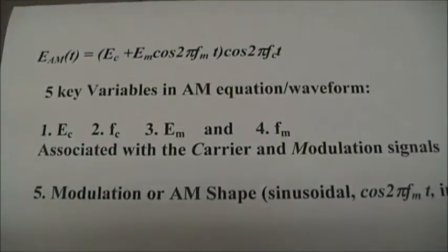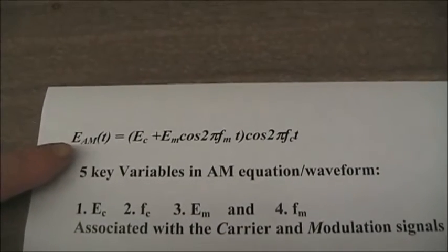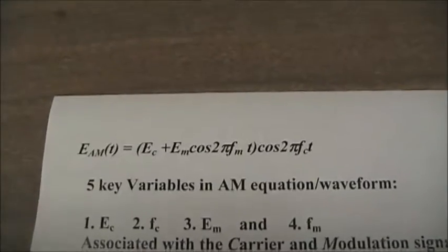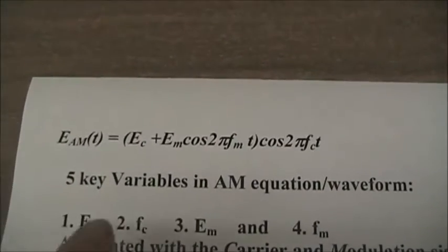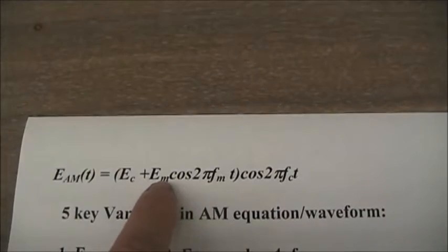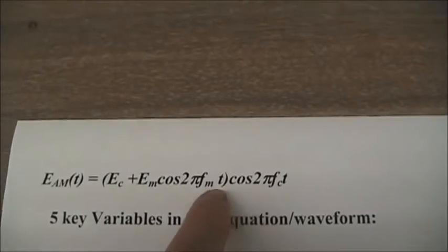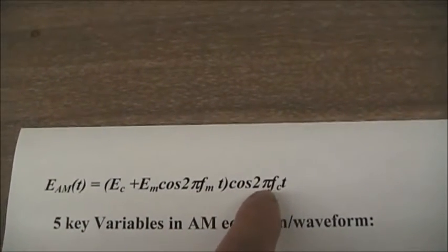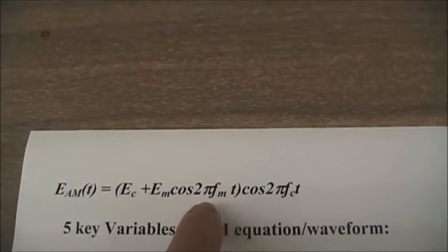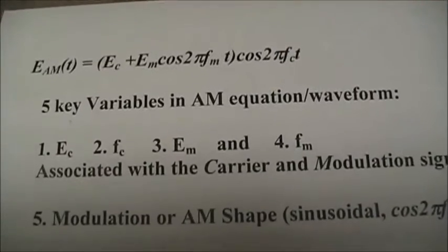So in AM systems, there's one key equation. The AM voltage, represented by EAM of T, E for generated voltage, is equal to E sub C, the carrier amplitude, plus the modulation amplitude and function waveform times the carrier. All of this forms the amplitude for the carrier.